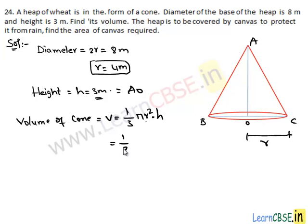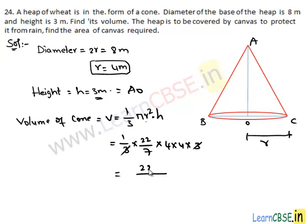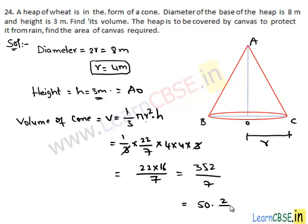So let's substitute the values. We have one-third, pi value is 22 upon 7, radius squared is 4 times 4, and height is 3. The 3 in the numerator and denominator cancel out, and we remain with 22 times 16 upon 7, which is equal to 352 upon 7. Converting it into a mixed fraction, we have 50 and 2 upon 7 meter cube.